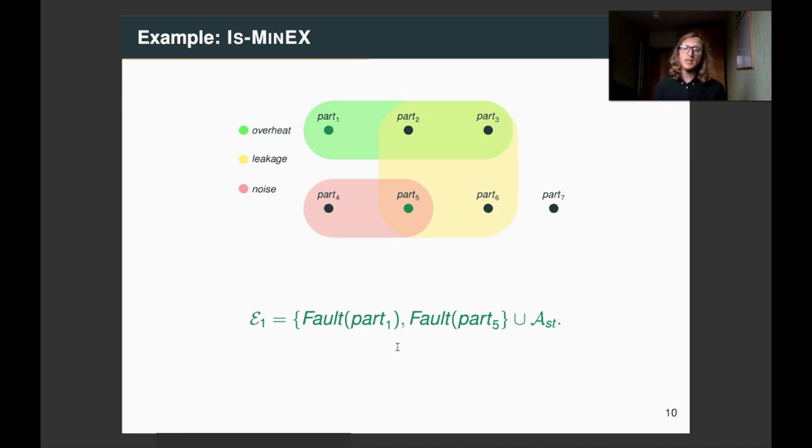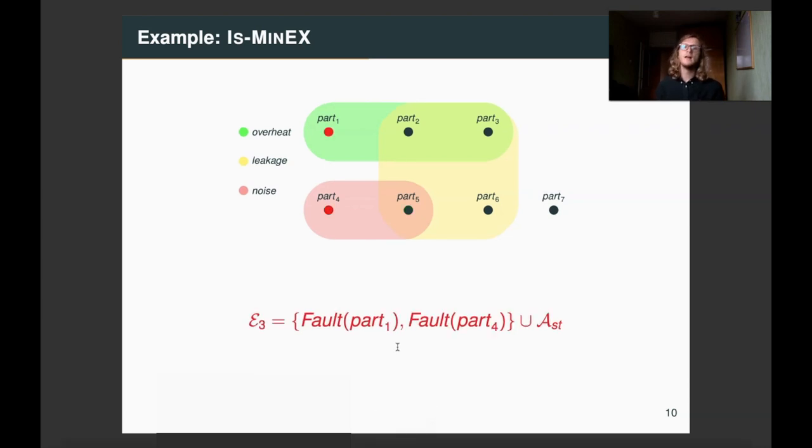So, in this case, for example, e1, which is part one, part five, together with structural facts, is indeed a min-ex, while fault part one, fault part four is not a min-ex, because it does not explain leakage.